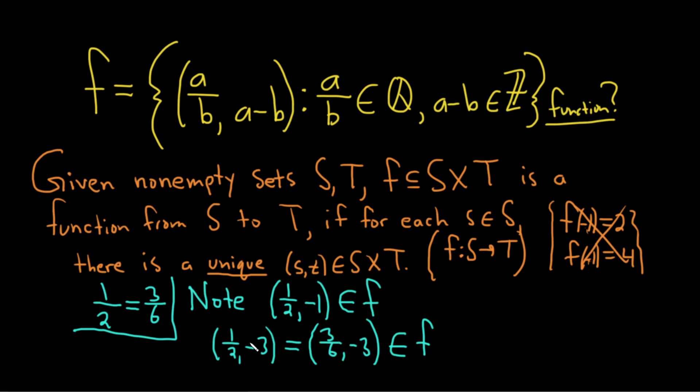You say, wait a minute, this is the same thing as this. So we've got this in f, we've got this in f. That doesn't work because we have, for a single s, we no longer have a unique element in f, right? We have different elements in the codomain. So f is not a function.